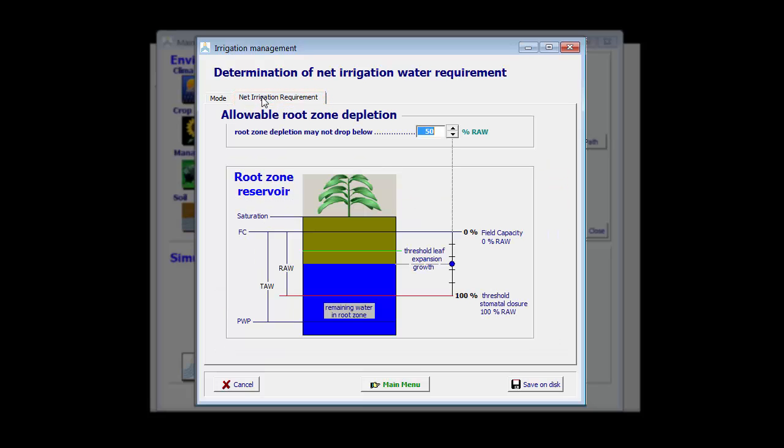In this tab sheet, I can set the threshold for the allowable root zone depletion, below which the water content cannot drop. For the moment it is put at 50% RAW. But I can see that this threshold is below the green line. And the green line is a threshold for leaf expansion growth. So it means, if I keep my level there, stresses will affect leaf growth expansions.